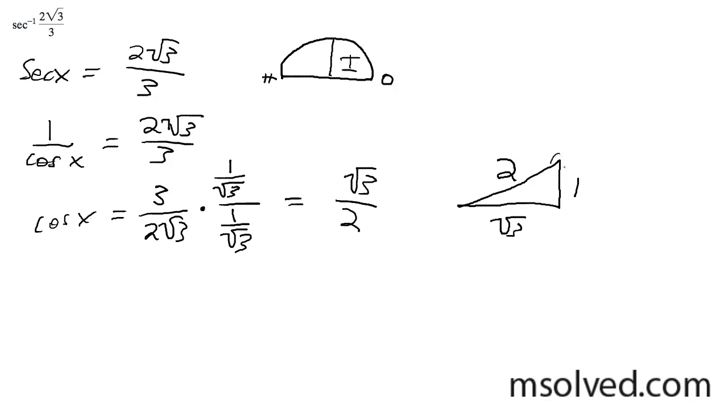So this looks a lot like a 30 degree triangle. And on the unit circle, this right here is simply pi over 6. So the solution to this entire problem right here is pi over 6 in radians.